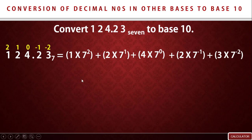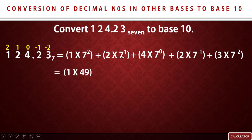Now we multiply through. 7 squared is 7 times 7, which gives 49, so 1 times 49. Then 7 raised to power 1 is 7, so plus 2 times 7. Then 7 raised to power 0 is 1, so plus 4 times 1.